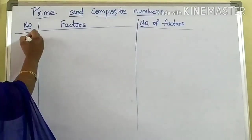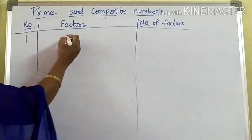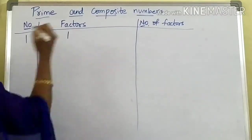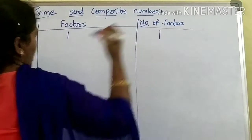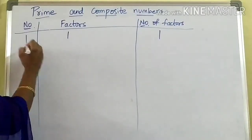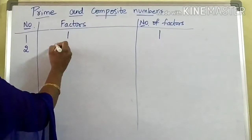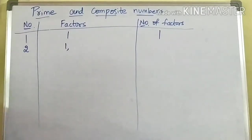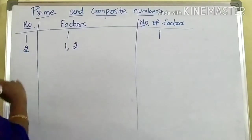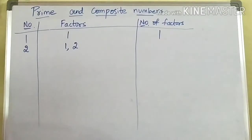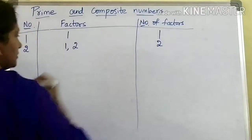If I take one, for one how many factors are there? Only one. So number of factors is one. Coming to next, I am taking two. What are the factors of two? Since one is a factor of every number, one and two — so one and two, two factors are there for two. So number of factors for two is two.